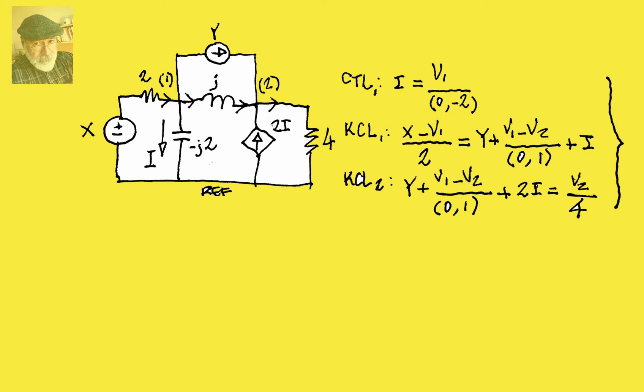So, these are the three equations, CTL 1, KCL 1, and KCL 2. Please review them quickly. i is v1 divided by (0,-2). KCL 1, current going in, x minus v1 over 2, and that is equal to currents leaving, that is y at the top, v1 minus v2 over (0,1), plus i.